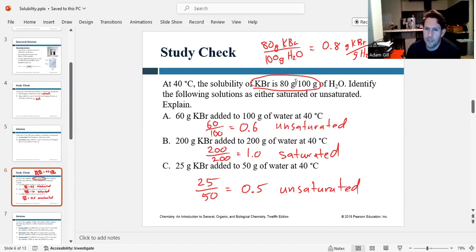So once again, if they give you maximum solubility as a fraction, just convert it to a decimal, and it'll make your life a lot easier when you're comparing values.